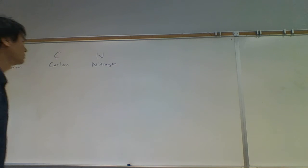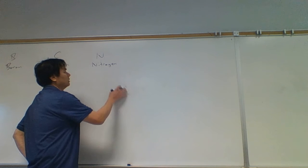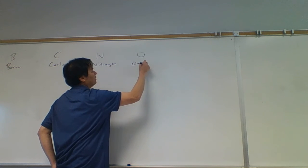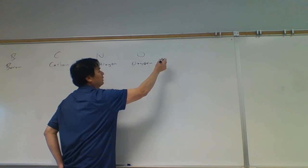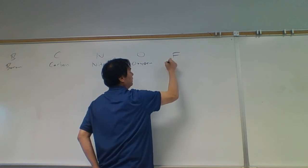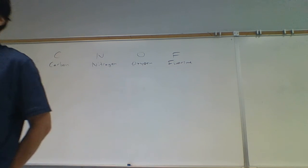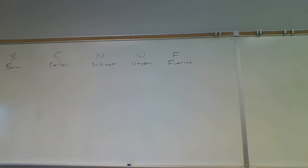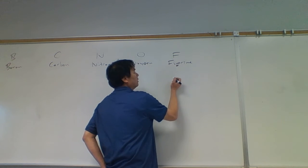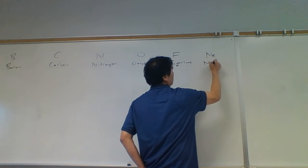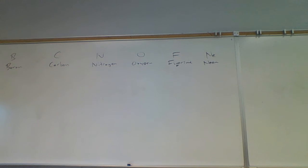After oxygen comes fluorine. A common error with fluorine is people misspell it — they spell it like flour, like a baking flour. Watch out for that. It's F-L-U, not F-L-O. After fluorine comes neon. You need to memorize the symbols and the names for these elements.